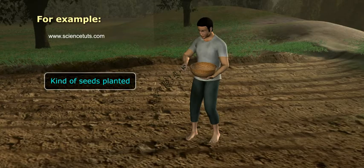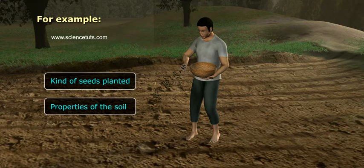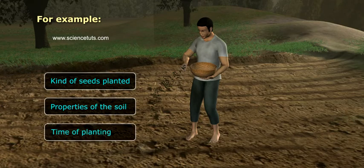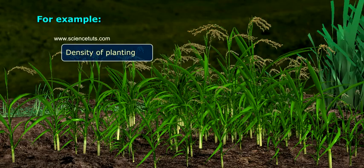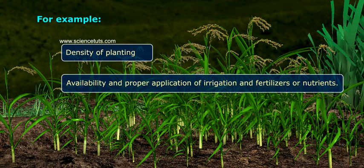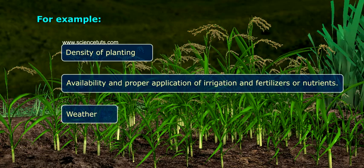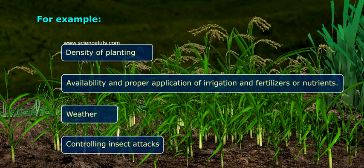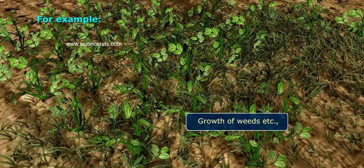For example: the kind of seeds planted, properties of the soil, time of planting, density of planting, availability and proper application of irrigation and fertilizers or nutrients, weather, controlling insect attacks, and the growth of weeds.